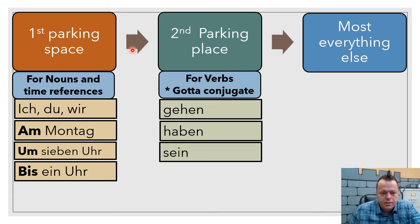We have the first parking space for nouns and time references. I put in here pronouns, too. Pronouns are generally the more common. You can still use nouns, but ich, du, wir, I, you, we, he, she, it, those are the type of words that might go here. Time references look like this: am Montag, that counts like one block, on Monday. Um sieben Uhr, at seven o'clock. Um sieben Uhr, until one o'clock.